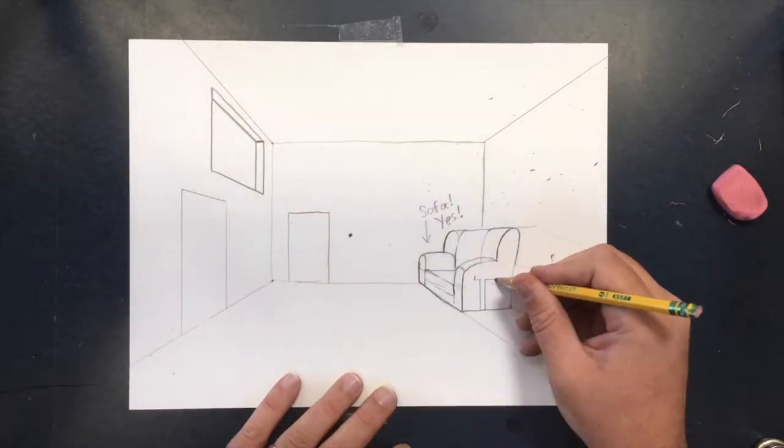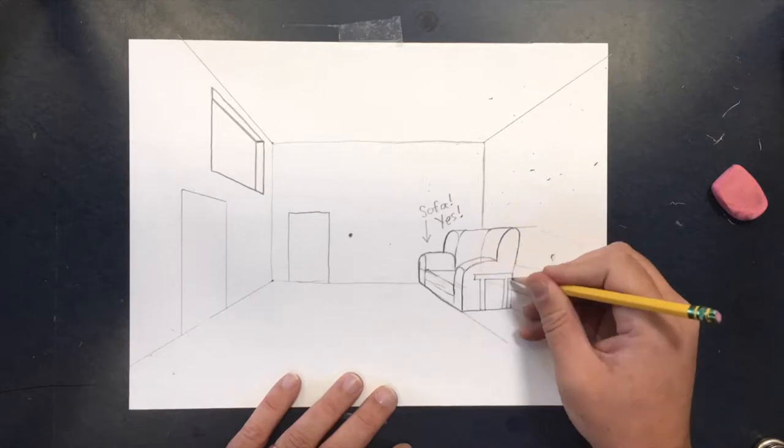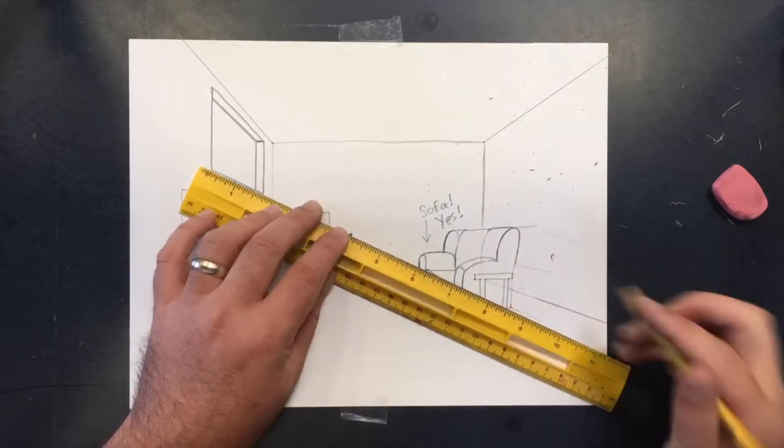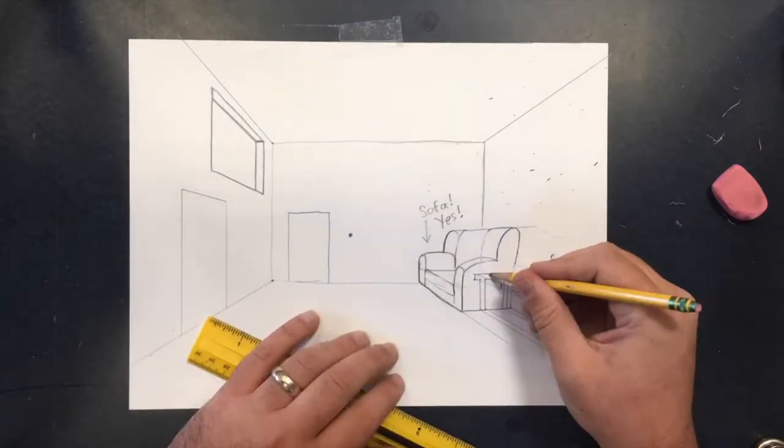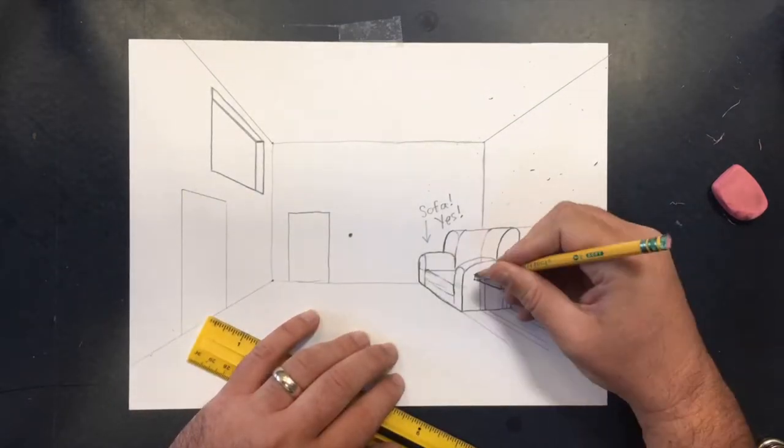So all you have to do is soften those lines and add details to make the couch look sit-able. And I'll do the same thing here with this little coffee table, but instead of starting the shape on the wall, I'm starting it on the side of the couch.